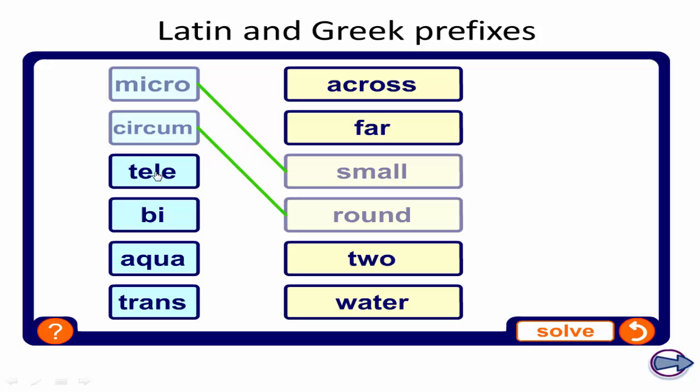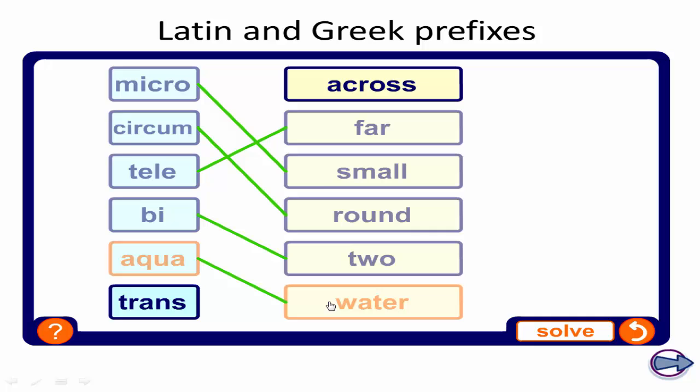Tele, like in telescope, so it means far. Bi, and we agreed that bi means two. Aqua, and this has to do with water. And trans, which means across.